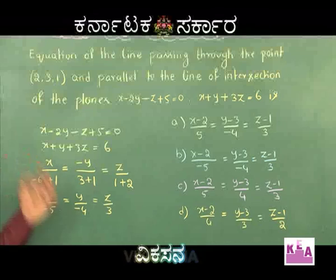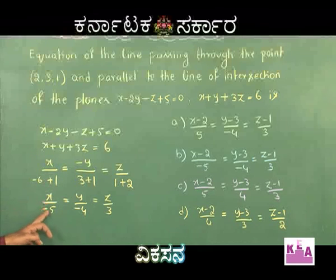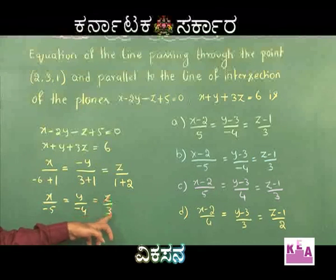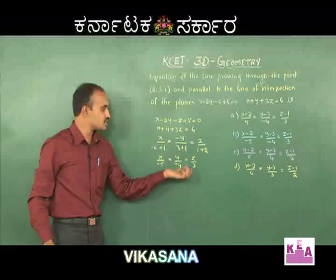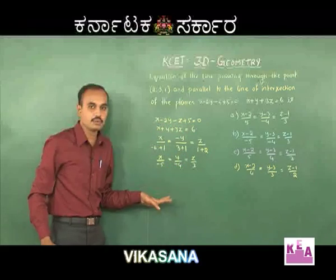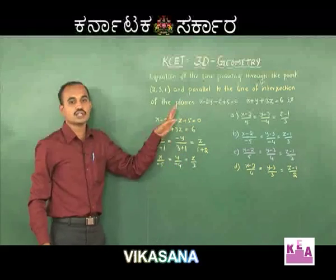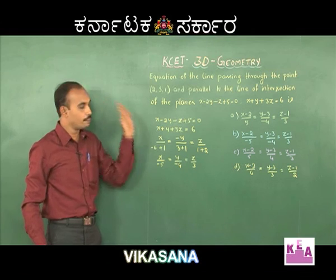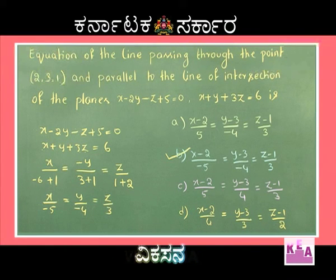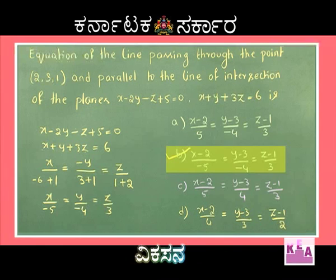The denominator values are −5, −4, 3. Comparing with the options, this matches option B: (x−2)/(−5) = (y−3)/(−4) = (z−1)/3. Therefore, option B is the right answer.